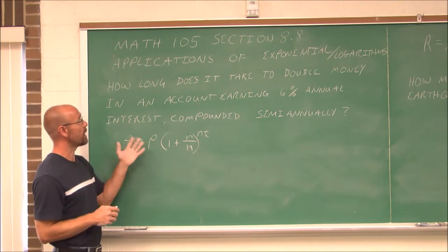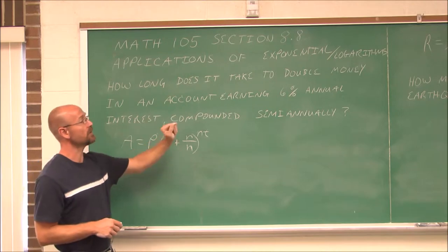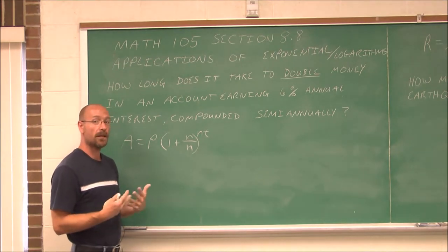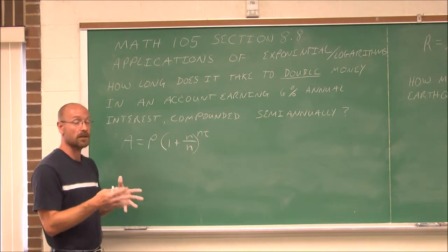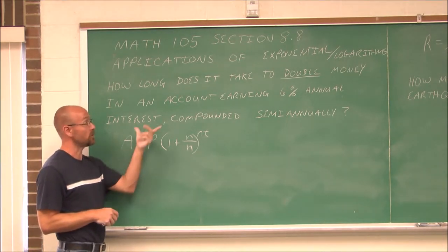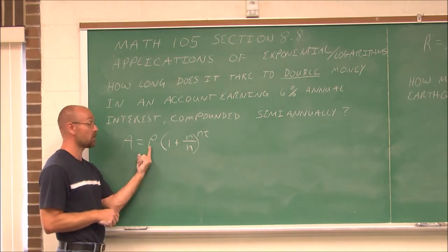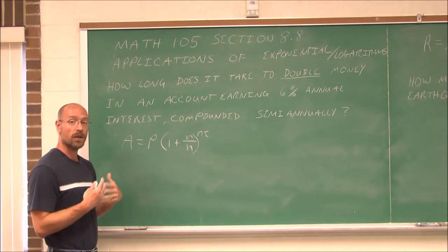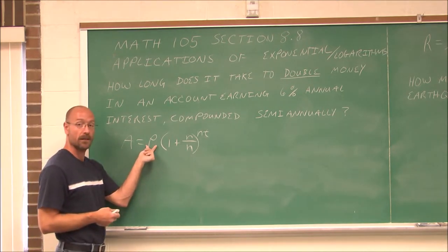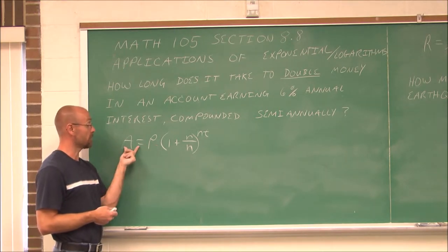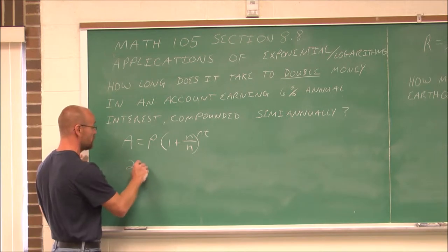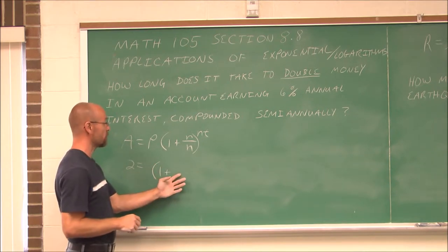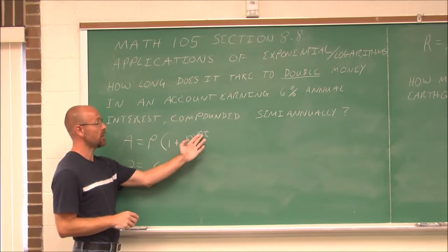If we think about what this question asks, we know we're dealing with compounded interest. It asks, how long does it take to double money? Not necessarily how much I'm starting with, just how long it takes to double. So essentially, what we're told is that this value is going to double. I want twice that value as output. So let's just choose an arbitrary amount. If this is 1, then this value would be 2. I'm going to say 2 equals 1 times this quantity.